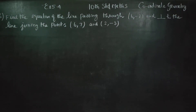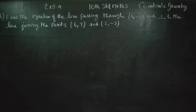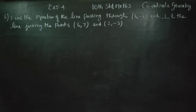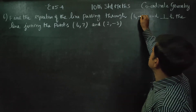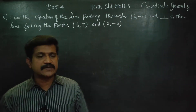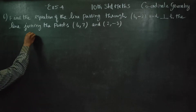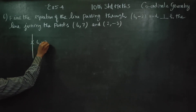Dear 10th standard students, I am Mitro Karanagaran. In exercise number 5.4, sum number 6: find the equation of the line passing through (6, -2) and perpendicular to the line joining the points (6, 7) and (2, -3).